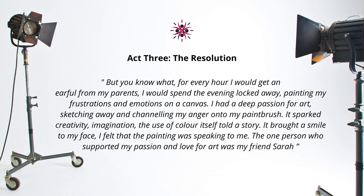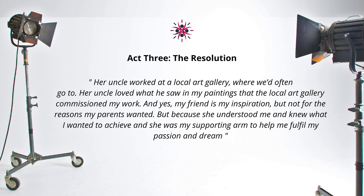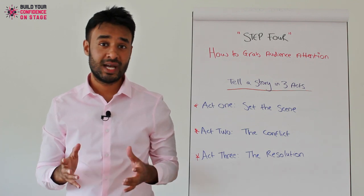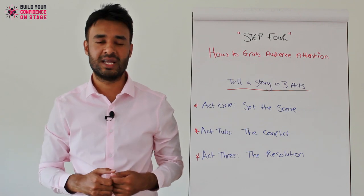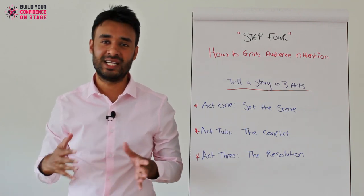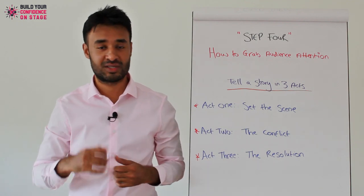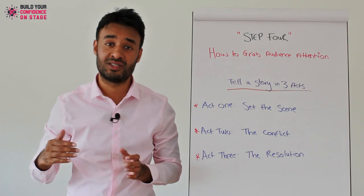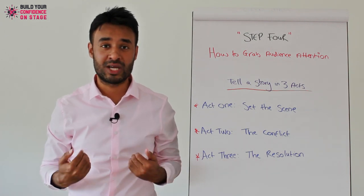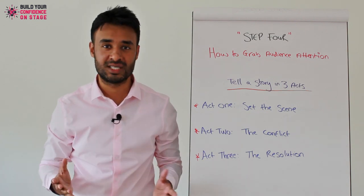The one person who supported my passion and love for art was my friend Sarah. Her uncle worked at a local art gallery where we'd often go. Her uncle loved what he saw in my paintings and the local art gallery commissioned my work. And yes, my friend is my inspiration, but not for the reasons my parents wanted — because she understood me and knew what I wanted to achieve, and she was my supporting arm to help me fulfill my passion and dream. I had all this anger built up, and I channeled that energy through my paintbrush because I had a love and passion for art. My parents wanted me to follow Sarah in the direction of academics, but I followed my own passion with her support to become an artist and have my work commissioned.